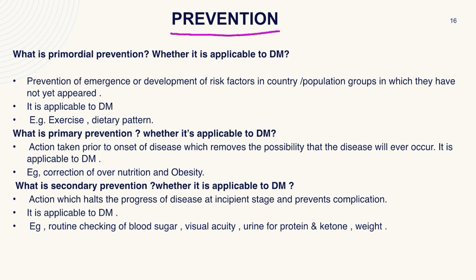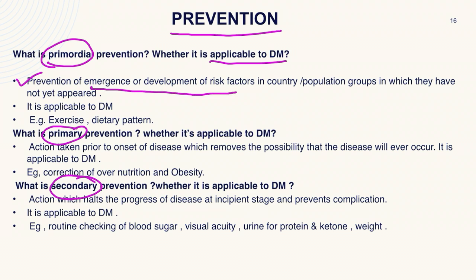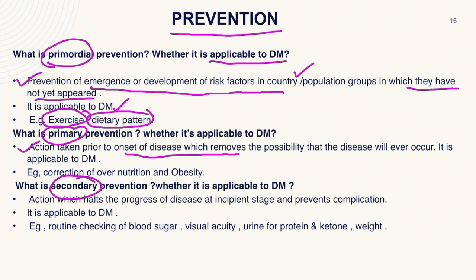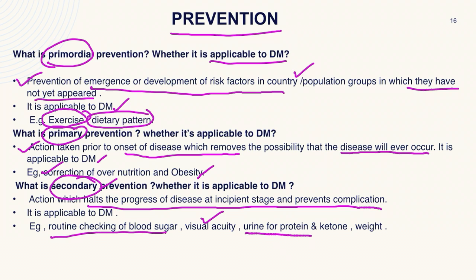The most commonly asked question is how to prevent diabetes mellitus. There are three levels of prevention: primordial, primary, and secondary. Primordial prevention is the prevention of emergence of new risk factors in a locality where they are not yet present — incorporating exercise and dietary pattern changes. Primary prevention is action taken prior to onset of disease to remove the possibility of disease, such as correction of over-nutrition and obesity. Secondary prevention halts the progress of the disease at the initial stage; this includes routine checking of blood sugar, visual acuity, urine for ketones and proteins, and weight measurements.